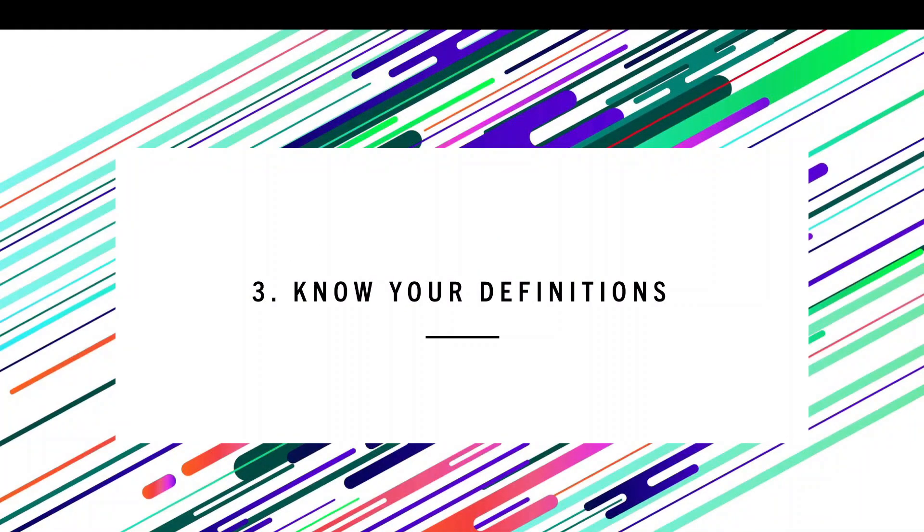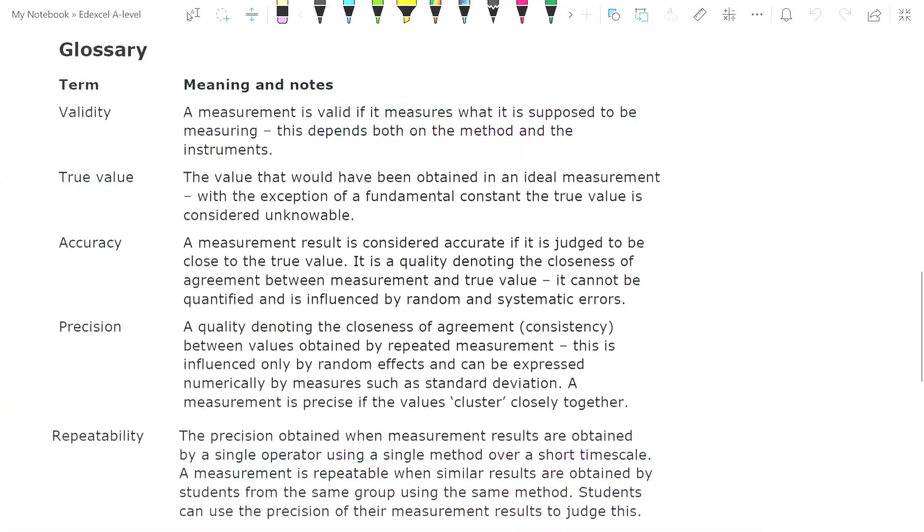My third piece of advice is to know your definitions. The definitions are given to you in one of the glossaries at the back of the specification but here they are for easy reference. Feel free to pause the video and jot them down if you want or you can just go into the specification and find them. They have in the past asked for actual repeats of this so if it gives you comfort you can learn what some of the most common things are. So true value has been asked: the value that would have been obtained in an ideal measurement.